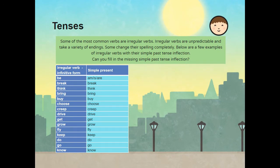Some of the most common verbs are irregular verbs. Irregular verbs are unpredictable and take a variety of endings; some change their spelling completely. Below are a few examples of irregular verbs with their simple past tense endings. Be in the simple present tense is am, is or are. The verbs break, think, bring, buy, choose, creep, drive, get, grow, fly, keep, do, go and know — all in the simple present tense.